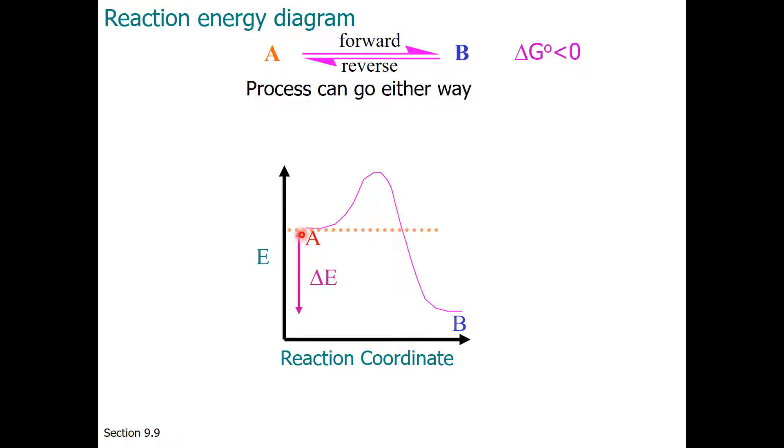first we need to break reactant bonds, which requires energy, before we form new product bonds. The process of breaking reactant bonds is known as the energy of activation forward. Going forward, this hill must be climbed in order to get to product.